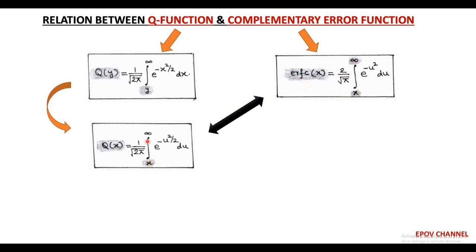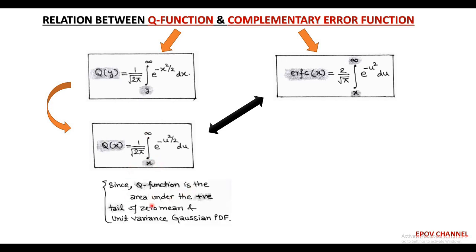As we have already discussed, the Q-function equals the area of the positive tail of the Gaussian PDF. After comparison, we find that the limits from u = x to u = infinity represent the positive tail of the Gaussian PDF — that is the Q-function — and these limits are the same for the complementary error function. So we can say that the Q-function corresponds to the complementary error function.